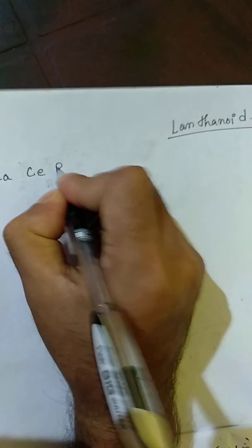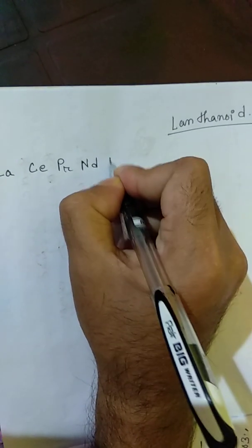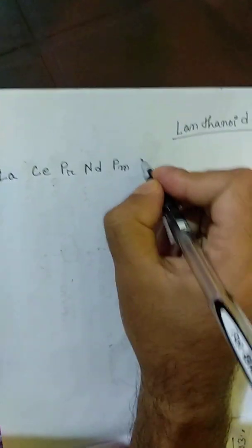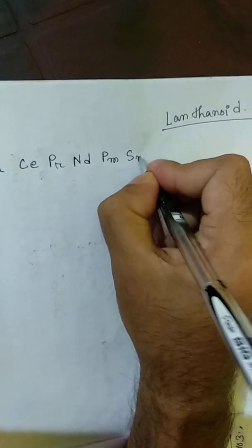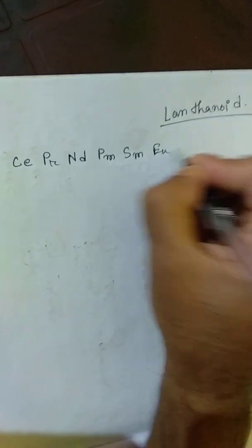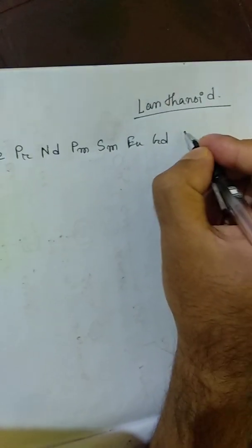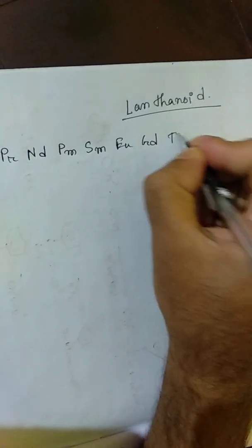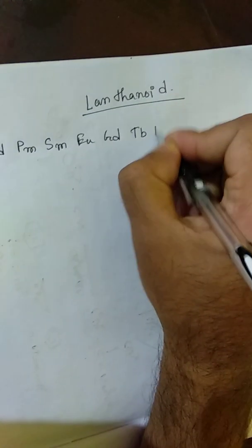Next elements: Praseodymium (Pr), Neodymium (Nd), Promethium (Pm), Samarium (Sm). These are the next elements in the lanthanoid series.